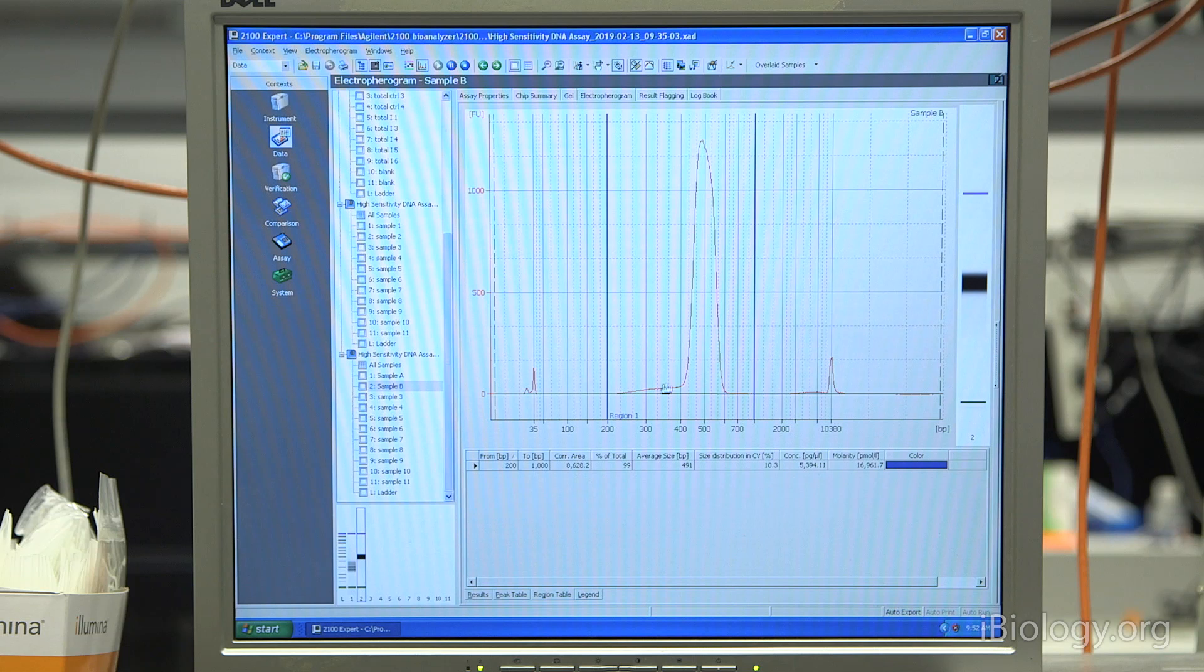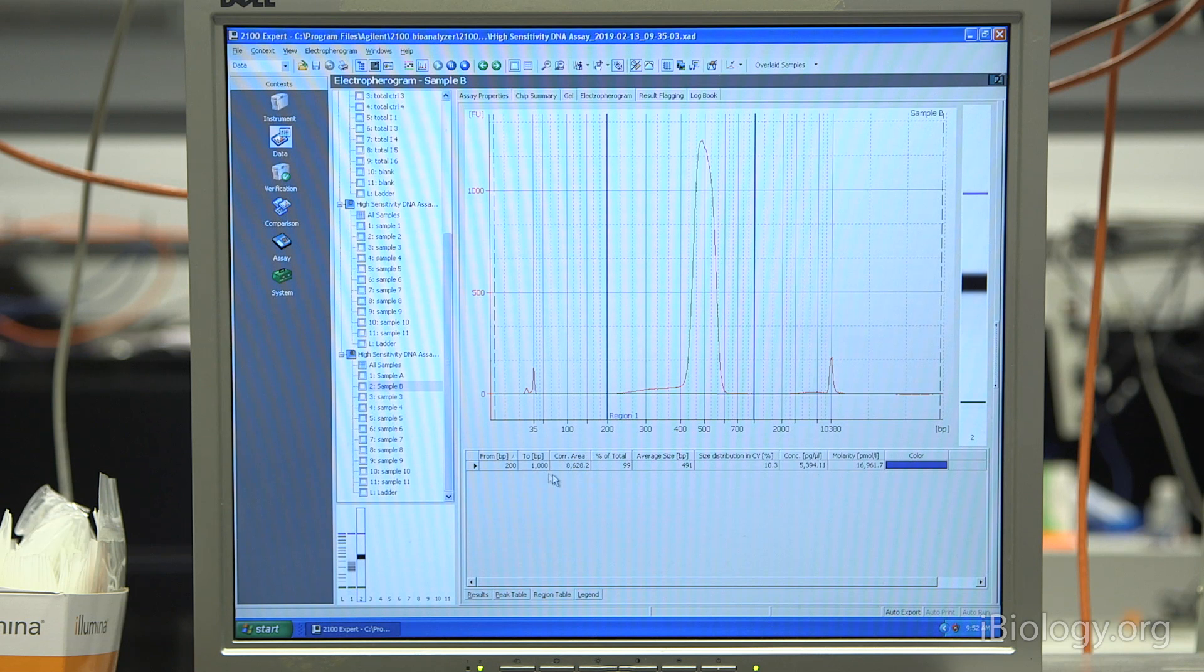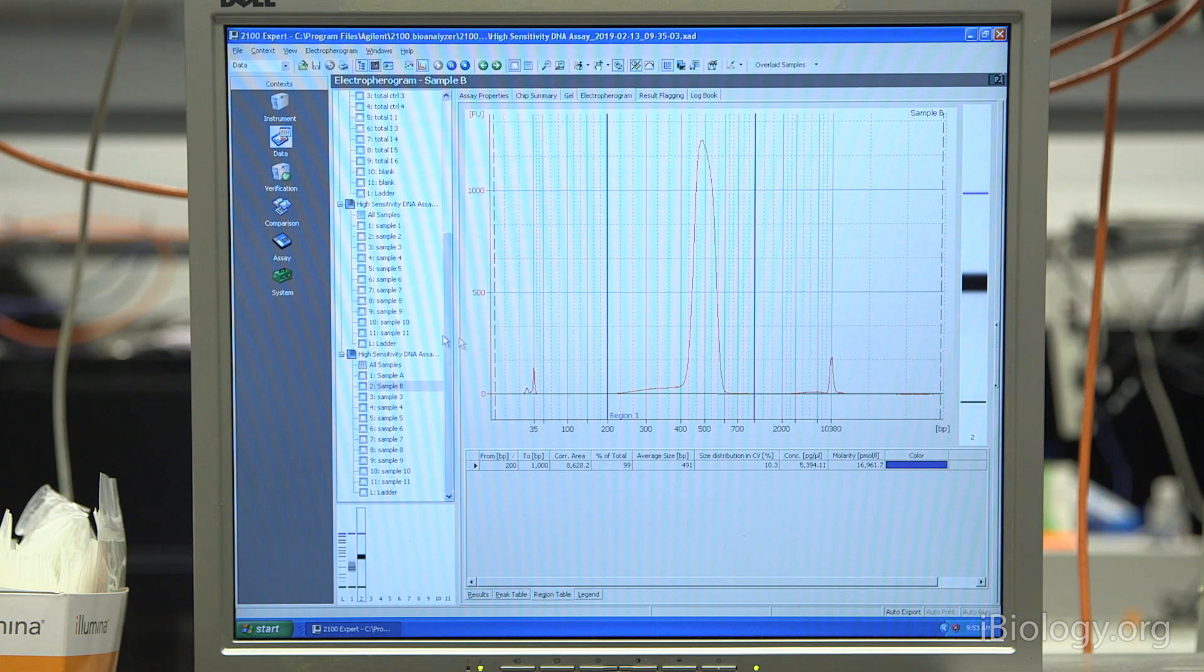Our other high-concentration sample is also being analyzed in this region. You can see that this is a much higher concentration library. This is measuring it at roughly 17 nanomolar. And the average size is 491 base pairs.